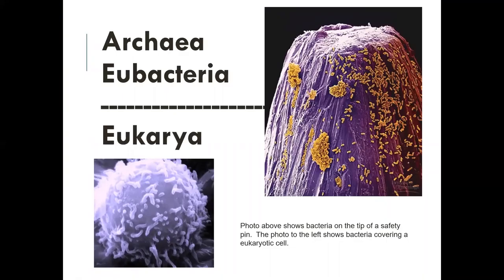Remember how different in size prokaryotes are from eukaryotes. This electron microscopic image of a pinhead shows all the little tiny prokaryotic cells — bacteria on the very tip of a pin. Over here, this giant ball is a eukaryotic cell, while everything around it are little pieces of bacteria attached to it. You can clearly see the size difference between eukaryotic and prokaryotic cells.